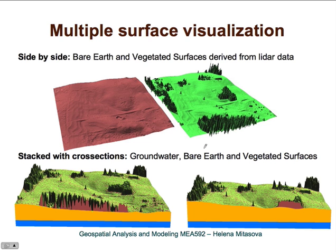Here we have data from our dataset. The first example shows bare ground data — this is the surface without any vegetation or buildings. Next to it is the so-called digital surface model, which has the bare ground data and everything on top of it captured by LIDAR, so it includes vegetation and buildings.